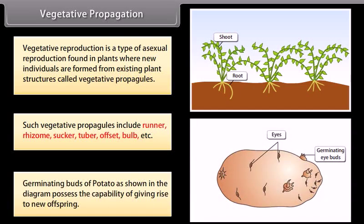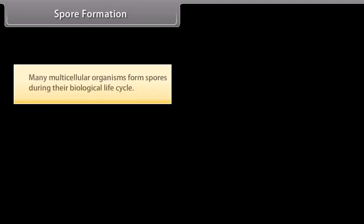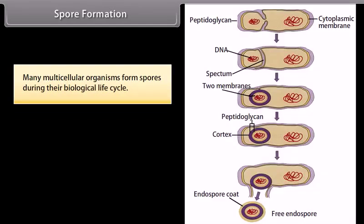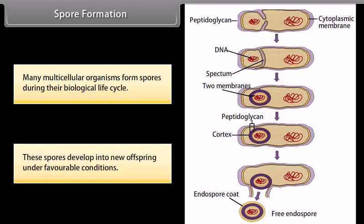Germinating buds of potato, as shown in the diagram, possess the capability of giving rise to new offspring. Many multicellular organisms form spores during their biological life cycle; these spores develop into new offspring under favorable conditions.